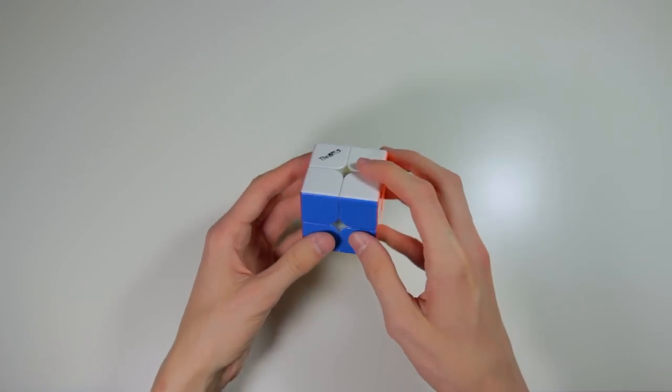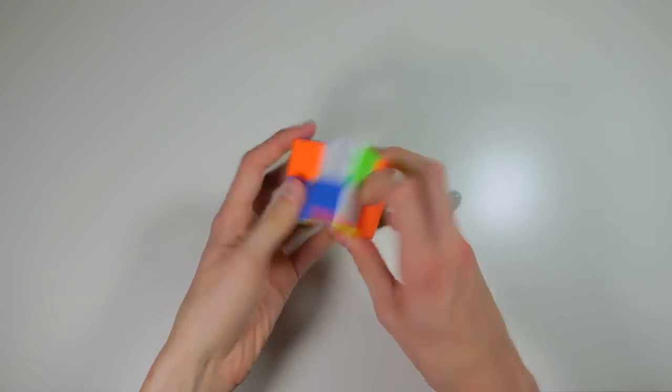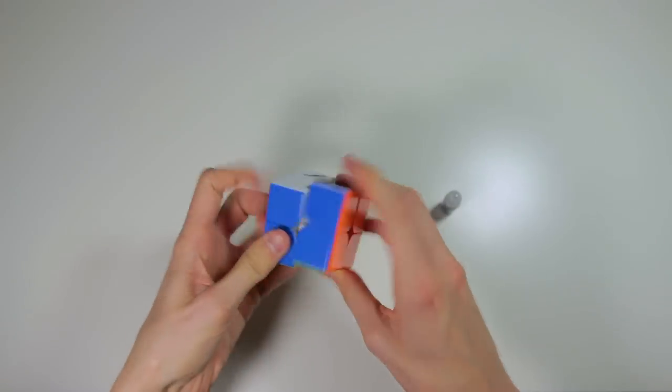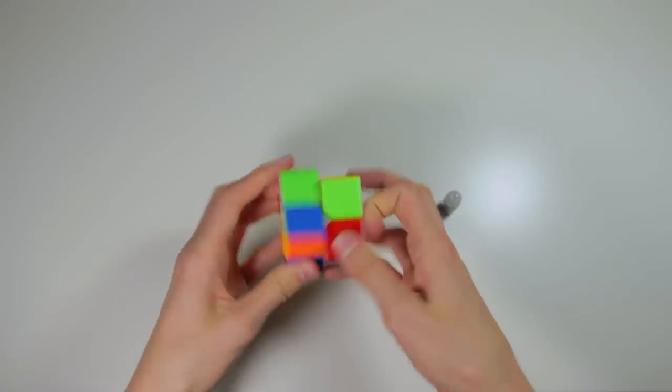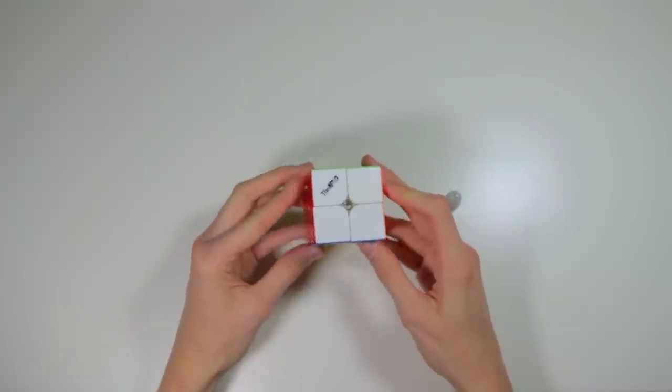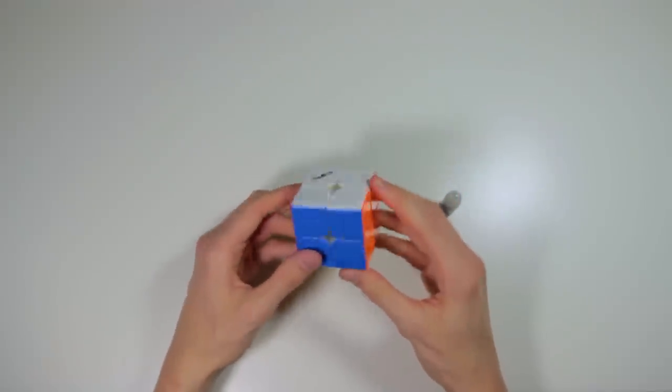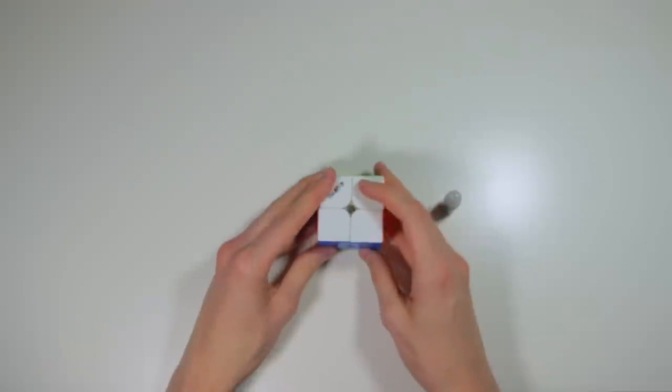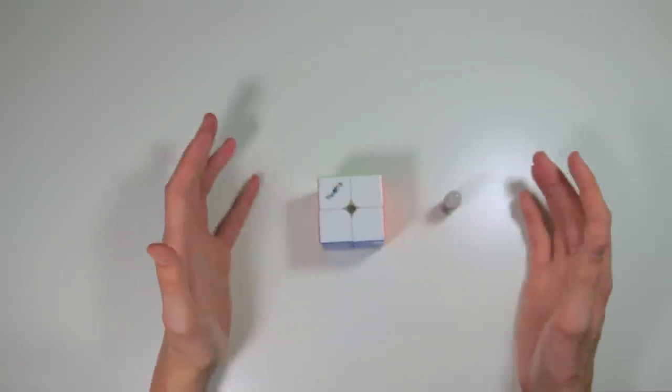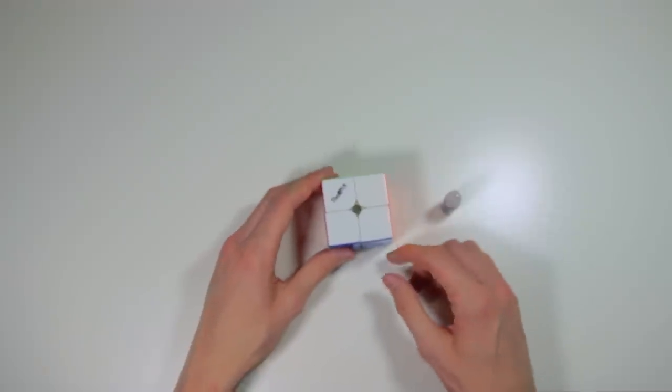So next we have the Valk 2M, and here's what it sounds like before the lube. So as you can see, this cube is already very mellow and soft feeling and sounding. So that's why I want to include this cube in here to see what it can do to a cube that isn't as clacky and loud originally, like the Weilong GTS version 2.